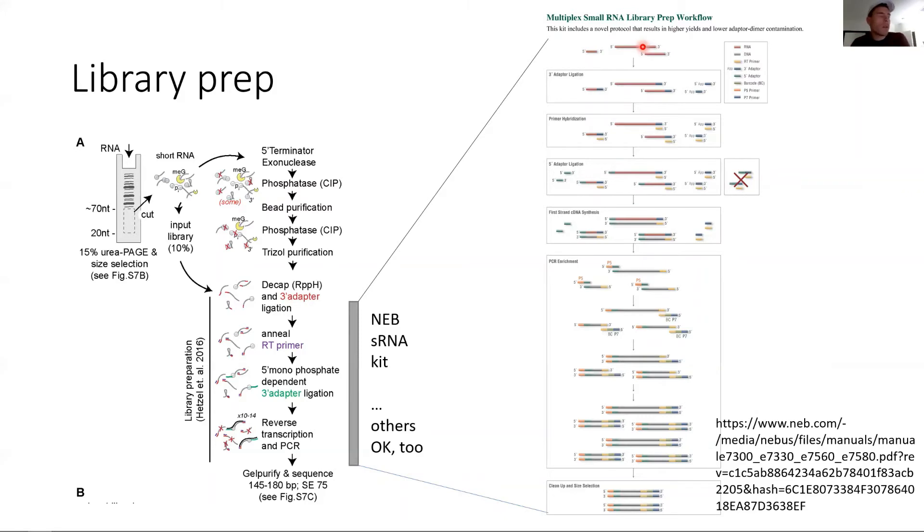Now that you have a monophosphate, we can actually go through the small RNA workflow. The first thing we're going to do is we add a 3-prime adapter. This is T4 RNA ligase 2 dependent. A quick note here: in the kit this is the T4 RNA ligase 2 truncated. It is not the KQ mutant. So if you're really anal about phosphorylation, you might have to switch it out to the KQ mutant, but so far we did not experience any problems with it.